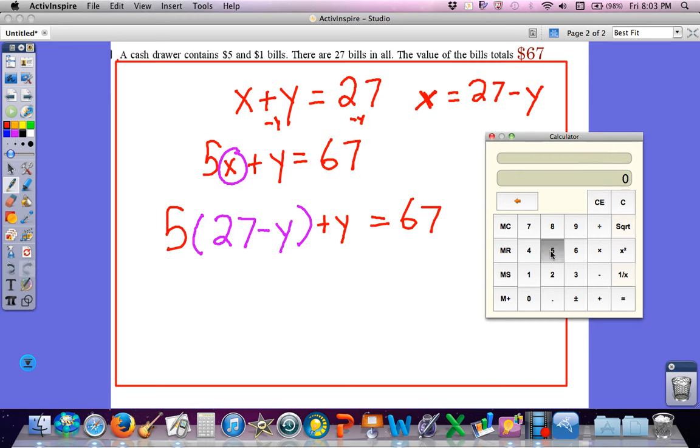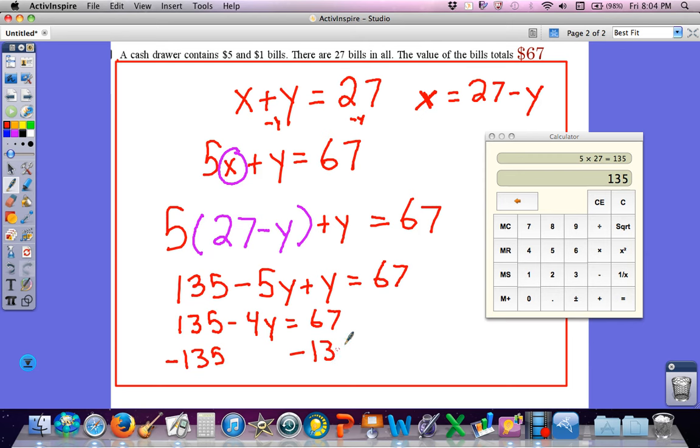So now you can see this is taking much longer. 5 times 27 is 135, 5 times negative Y is negative 5Y plus Y equals 67. So now I would have 135 minus 4Y equals 67. I would subtract 135 from both sides, and I would get negative 4Y equals negative 68. When I divide that 68 by negative 4, I get 17.